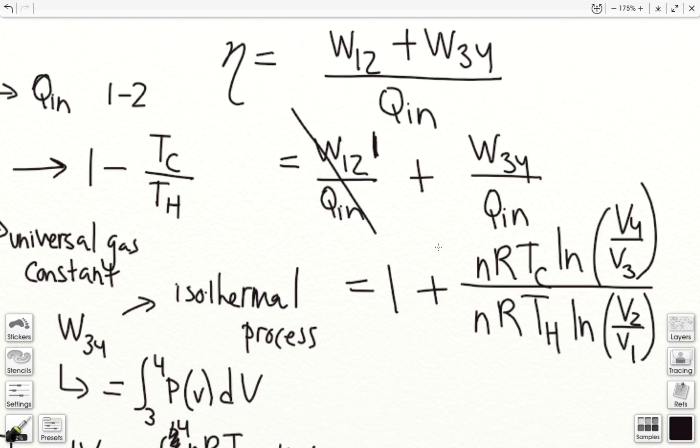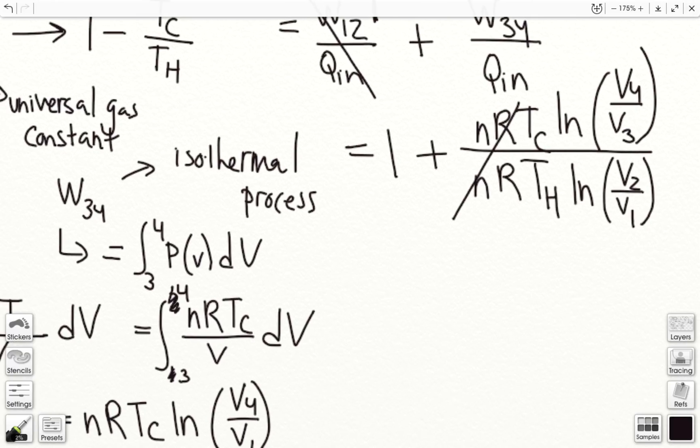Now, this is starting to look a little bit like our final expression. So now, here we have 1 plus Tc over Th ln of v4 over v3 and v2 over v1. Now, how are we going to simplify this?